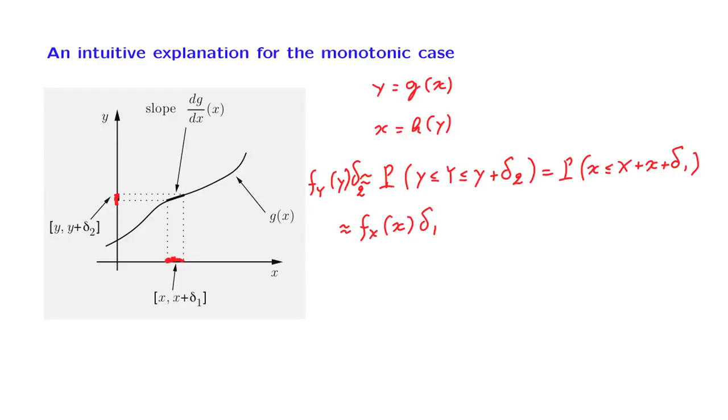If x moves up by amount of delta_1, how much is y going to move up? It's going to move up by an amount which is delta_1 times the slope of the function g at that particular point. So that gives us one relation that delta_2 is approximately equal to delta_1 times the derivative of the function g at that particular x.